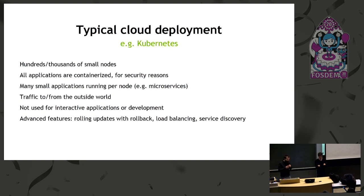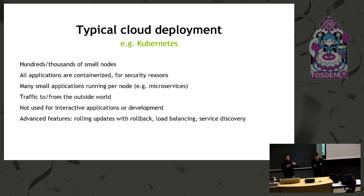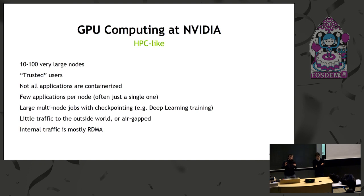Let's look at what a typical cloud deployment looks like. You don't have nodes like ours at 12 kilowatts — you have smaller instances on AWS, hundreds of thousands of them. You containerize for security, for packaging, and you have microservices — maybe 100 containers per node. You have traffic from the outside world, user uploads, internal traffic. Users don't access the cluster directly; they ask to deploy a new app on the cluster. You have advanced features — that's kind of what Kubernetes has to offer.